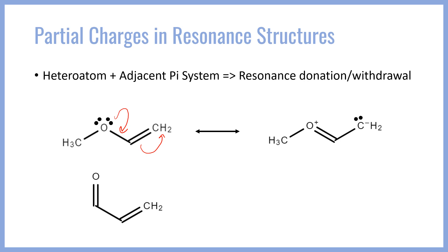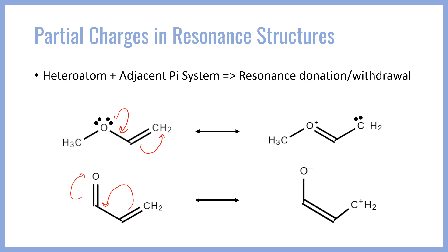Another possibility is a double bonded heteroatom like a carbonyl group adjacent to a pi system. In this case the double bonded heteroatom acts as a withdrawing group — the double bond from the pi system pushes here, and then this bond pushes onto the heteroatom because it withdraws electron density towards itself. That provides a resonance structure where electrons have moved as a negative charge onto the oxygen, leaving the carbon electron deficient with a partial positive charge.